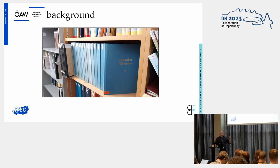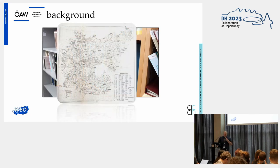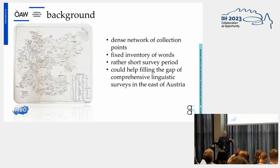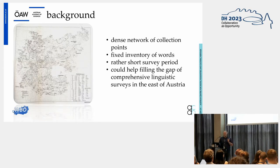This is the result of the former project — when it's on the bookshelf it's a 22-volume atlas. This is an example of such a map from the beginning of the 20th century. What makes the DVR so interesting for us as linguists is the very dense network of location points, the fixed inventory of only 188 words or concepts, the short period of the survey, and the fact that it may help fill the gap of comprehensive surveys in the east of Austria.